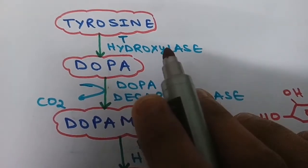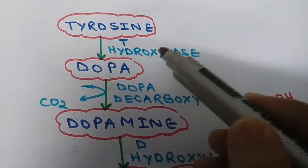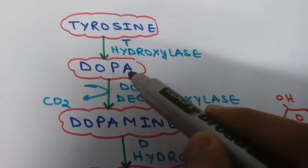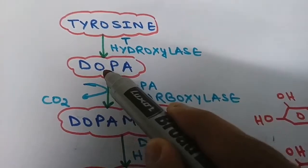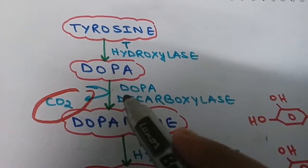Now we are going to discuss the metabolism of catecholamines, how catecholamines are formed from tyrosine. The first step is tyrosine forming DOPA. As we discussed in the melanin synthesis video, tyrosine forms DOPA, which is dihydroxyphenylalanine.